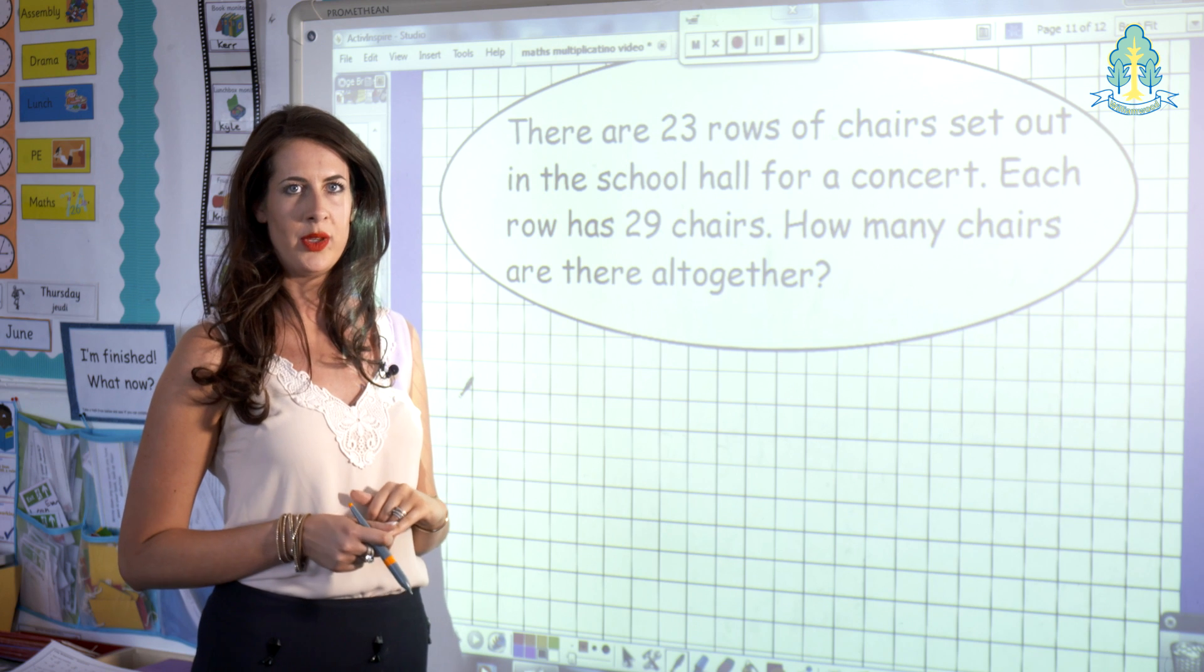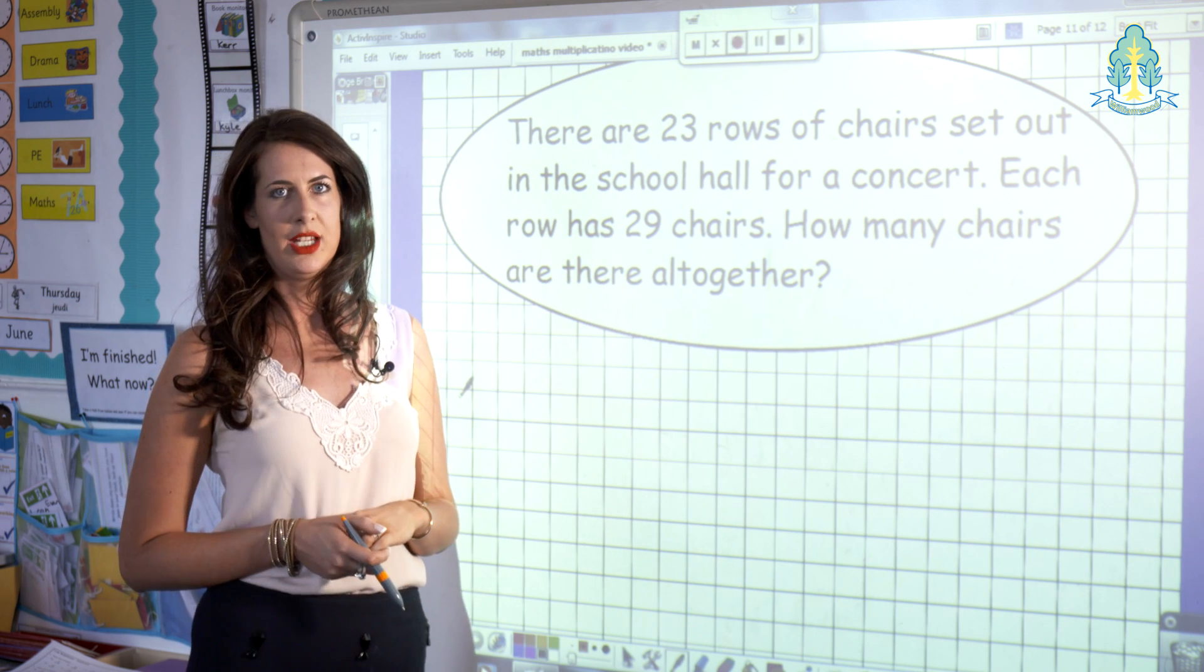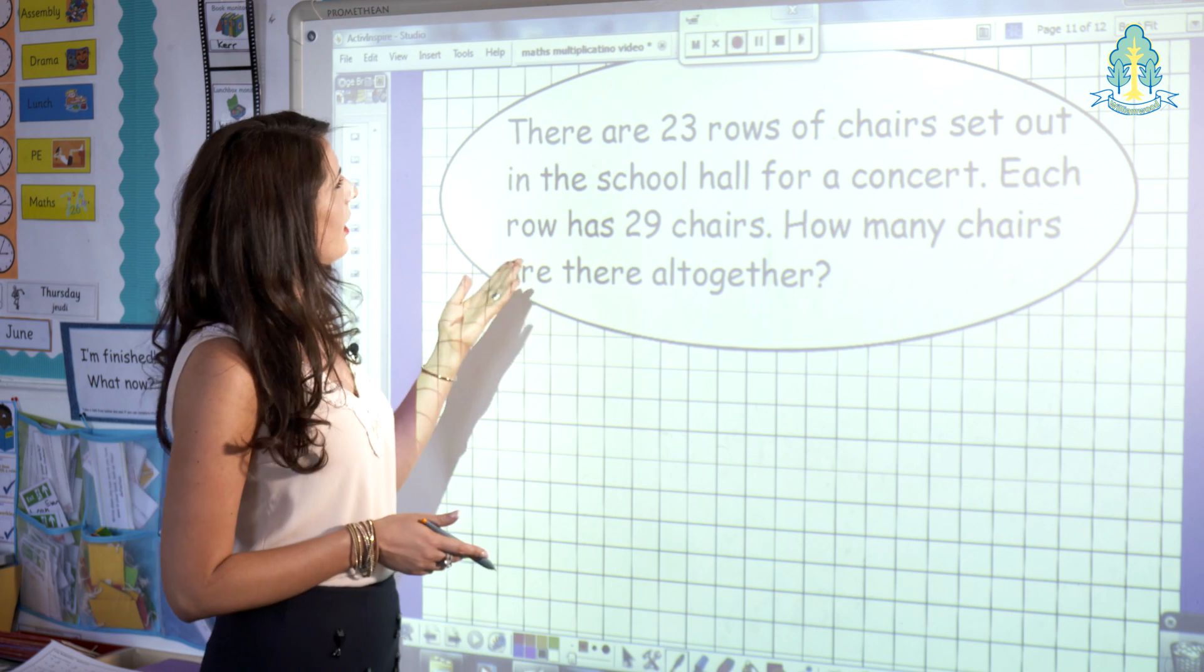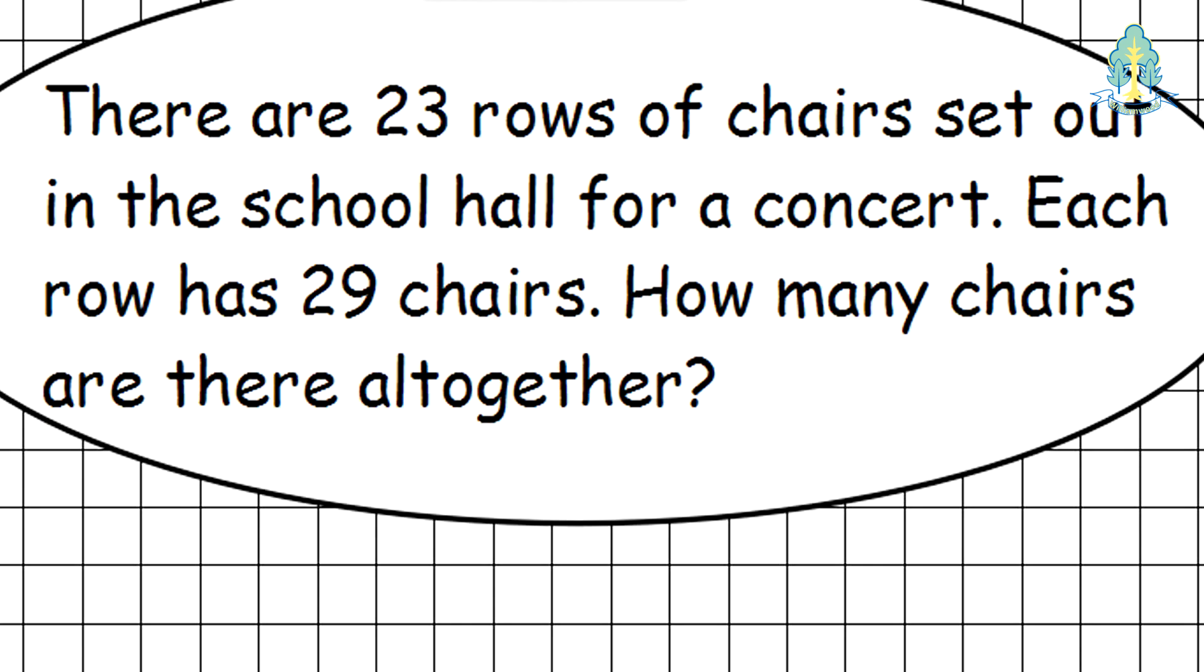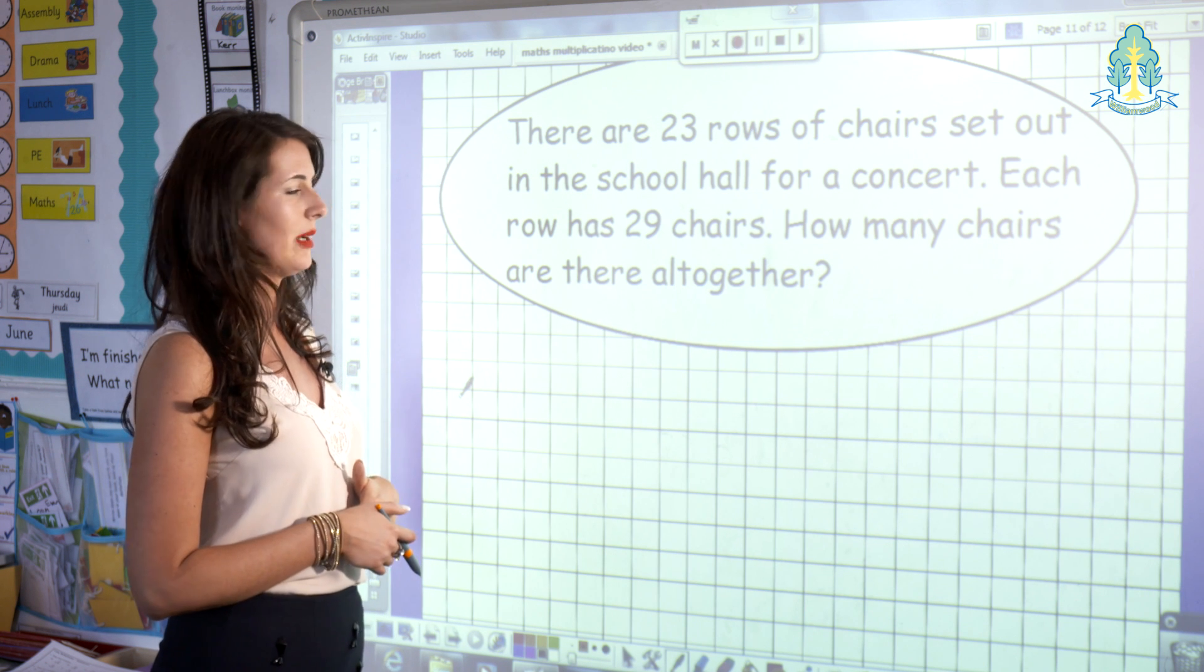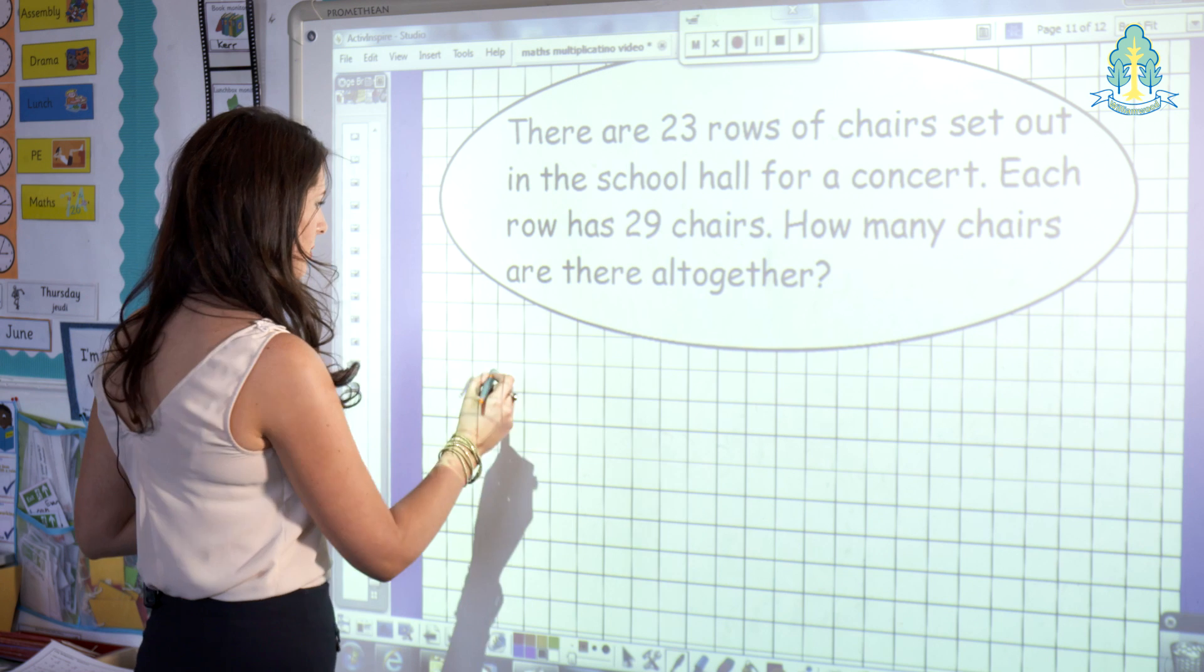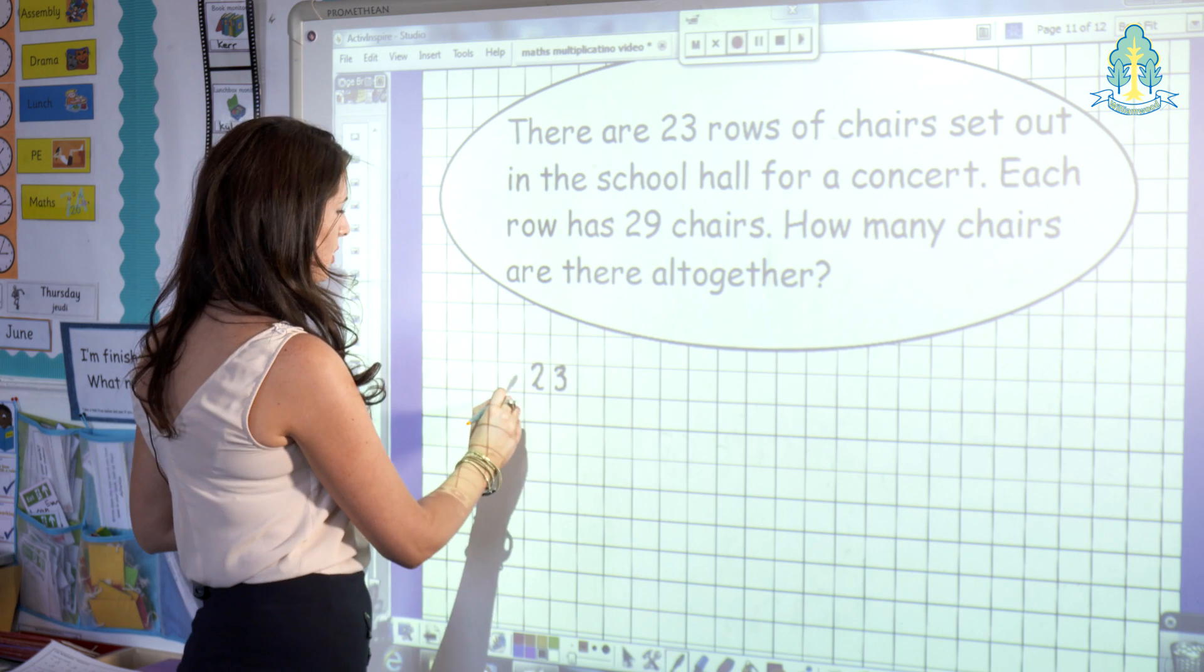As children become more comfortable with their long multiplication, they will find a long multiplication calculation appear within a context. Here is an example on the board: There are 23 rows of chairs set out in the school hall for a concert. Each row has 29 chairs. How many chairs are there altogether? The child will be able to work out that this involves a multiplication calculation and take the number 23 for each row and multiply this by 29.